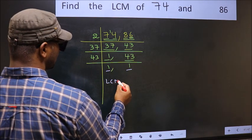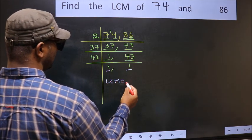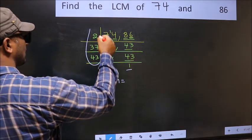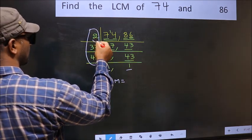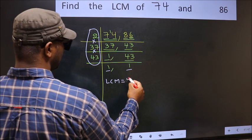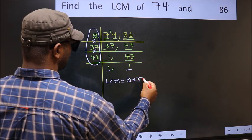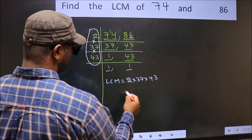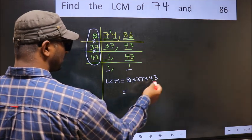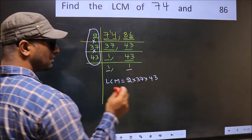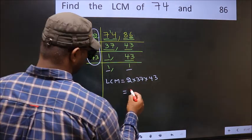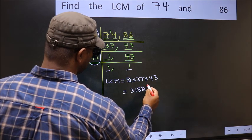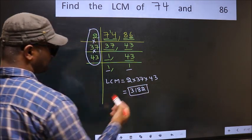So our LCM is the product of these numbers: 2 × 37 × 43. When we multiply these numbers we get 3,182, which is our LCM.